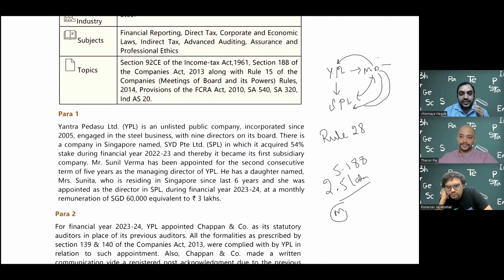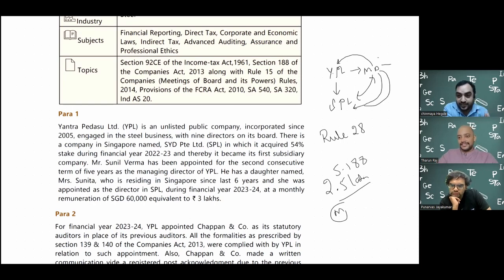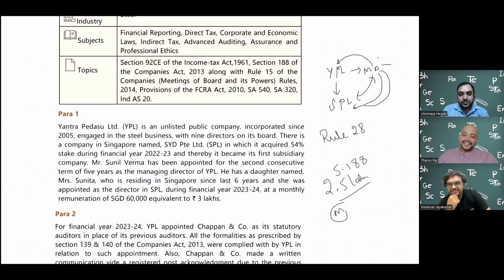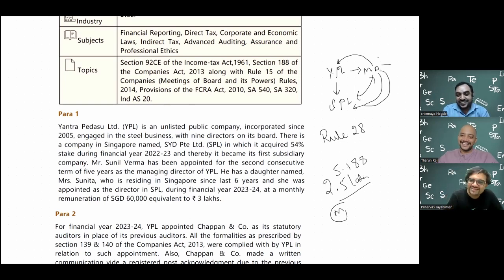Section 2(76) also says the same thing - for the subsidiary company, that company's relatives or director's relatives and even the holding company's director are related. It is synchronized across company law, FR, and GST. Interestingly, Ind AS 24 goes one step further in defining relatives - it mentions spouse, children, children of spouse, domestic partner, and children of domestic partners, reflecting international terminology used in IFRS standards.